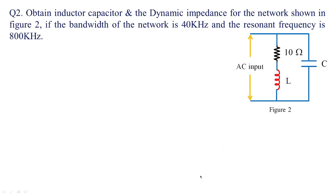In figure 2, we need to obtain inductance, capacitance, and the dynamic impedance when the bandwidth of the network is 40 kilohertz and the resonant frequency is 800 kilohertz. We need to obtain the values of L, C, and dynamic impedance. Dynamic impedance is the impedance of the circuit under parallel resonance, which we derived in our last class.